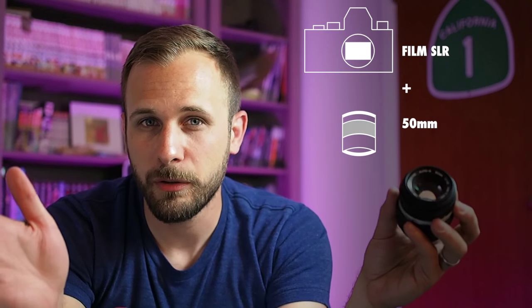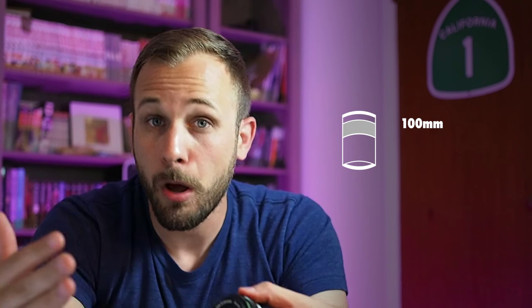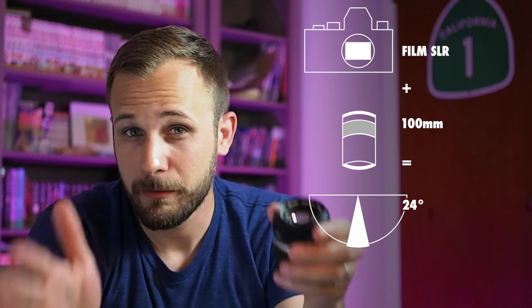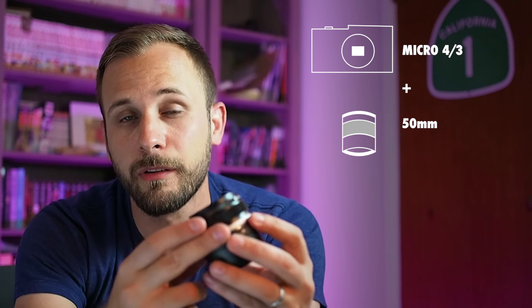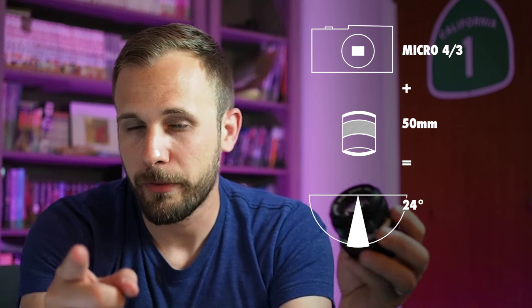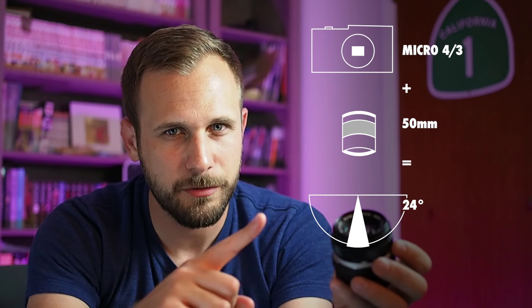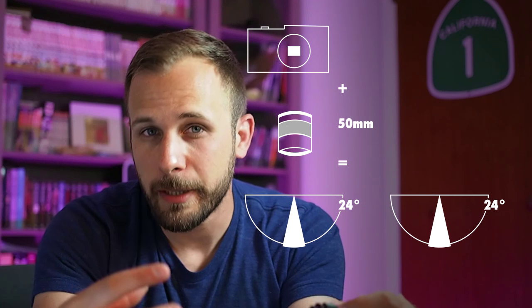A 50mm lens on an old film camera gives you a field of view of about 47 degrees. A 100mm lens on that same film camera gives you a narrower field of view of about 24 degrees. Now if I take that same 50mm lens and put it on my Micro Four Thirds camera via an adapter, it's not going to give me the 47 degrees anymore. It's going to give me a 24-degree field of view — just like the 100mm lens on the old film camera. So in terms of field of view, a 50mm lens on a Micro Four Thirds camera is the same as using a 100mm lens on an old film camera.